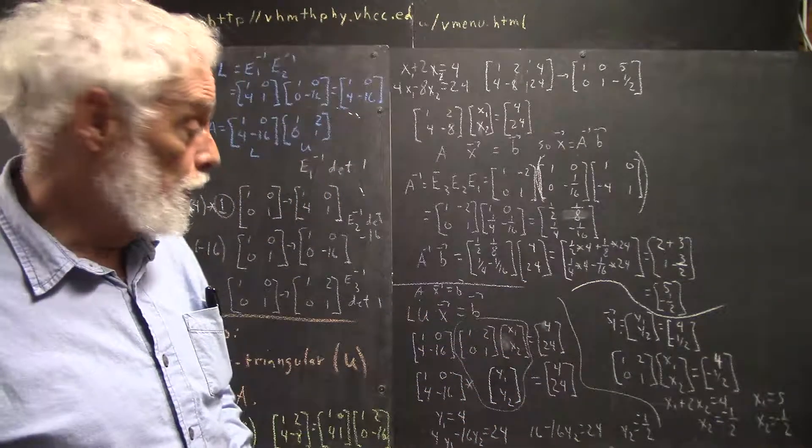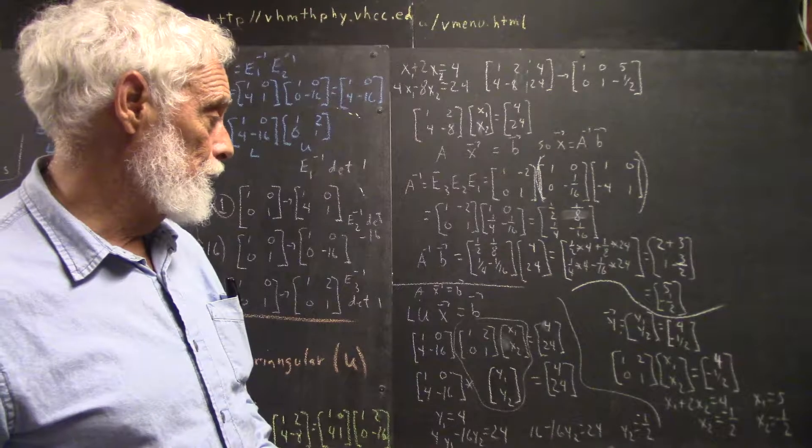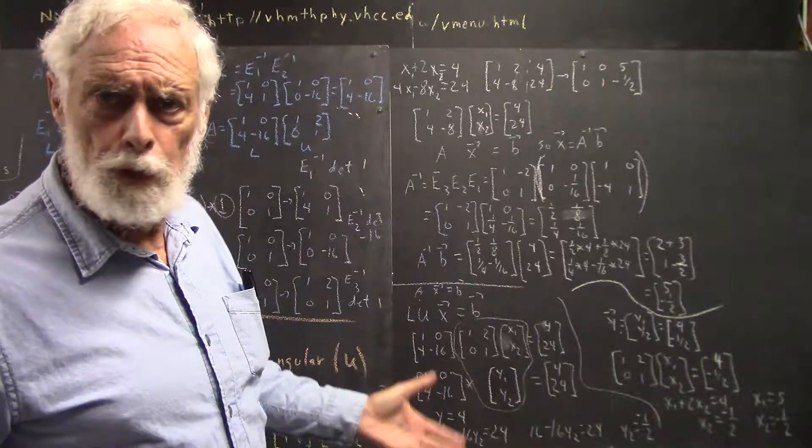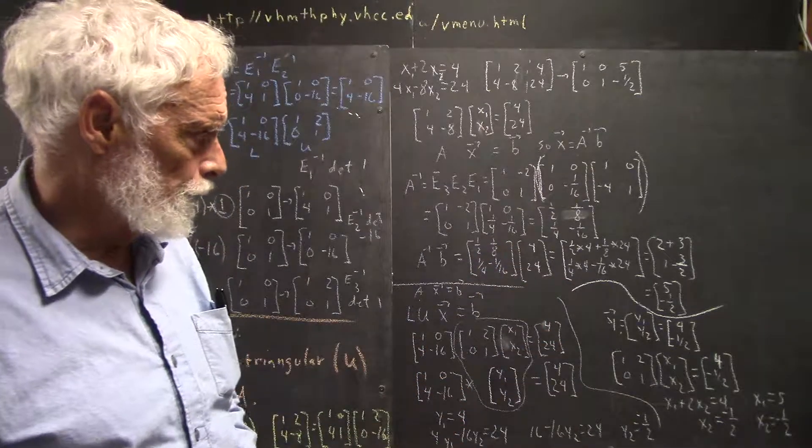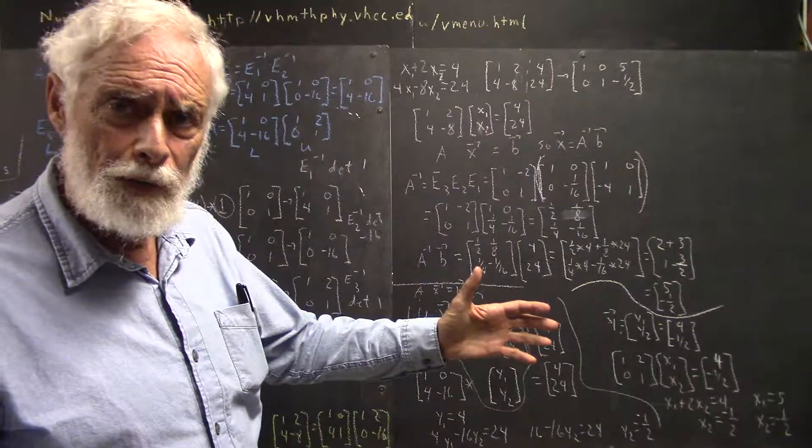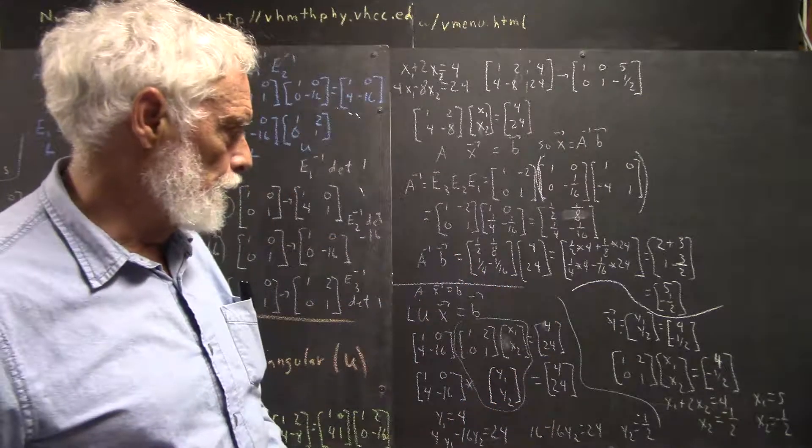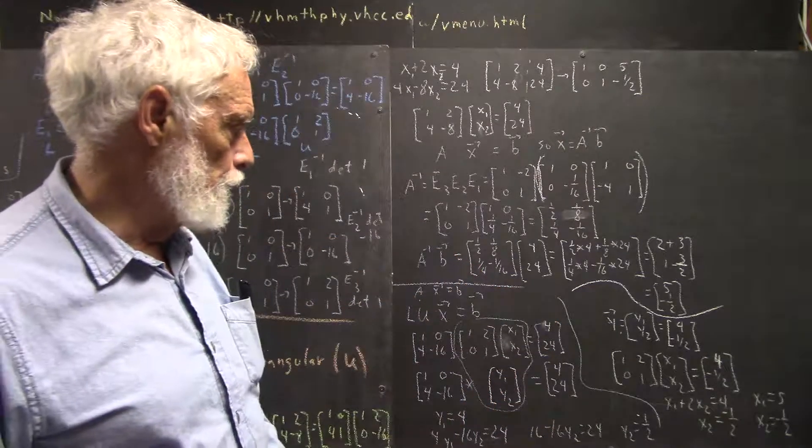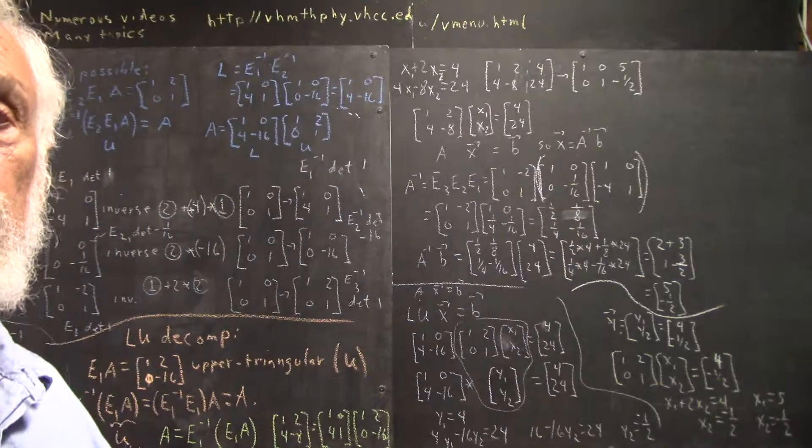This confirms our solution. And confirms, at least for this example, the validity of the LU decomposition. Now, the LU decomposition is probably more than we'd want to do for a 2x2 matrix. I'm just using it on 2x2 because everything is quite simple. If I had a 7x7 matrix, it wouldn't be too difficult to do an LU decomposition. And then everything is solved by forward substitution, then backward substitution.